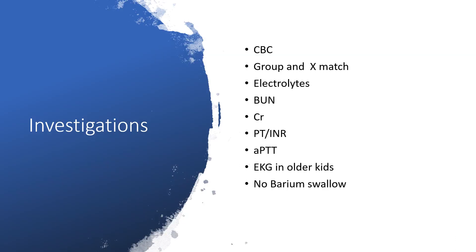Investigations: we have to get a complete blood count, although we might not know the true value of the PCV when the bleeding is recent — within hours, we're not going to get the true picture yet. We have to group and cross-match because we might have to transfuse, and if it is massive and we need to transfuse immediately and grouping and cross-match might delay, then we can give O-negative, particularly to the females.